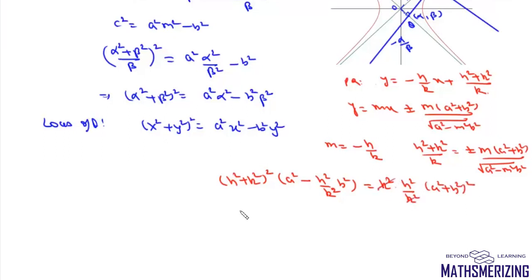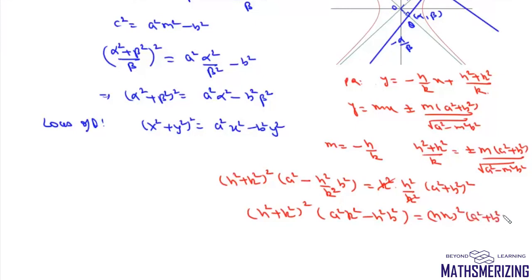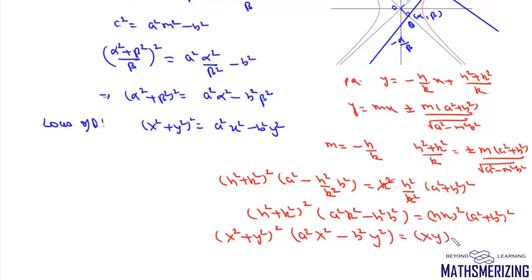Here k² cancels out. We can write the result as (h² + k²)² · (a²k² − h²b²) = h²k²(a² + b²)². Replacing h with x and k with y, the locus of R is (x² + y²)²(a²x² − b²y²) = x²y²(a² + b²)². That is the locus of R.